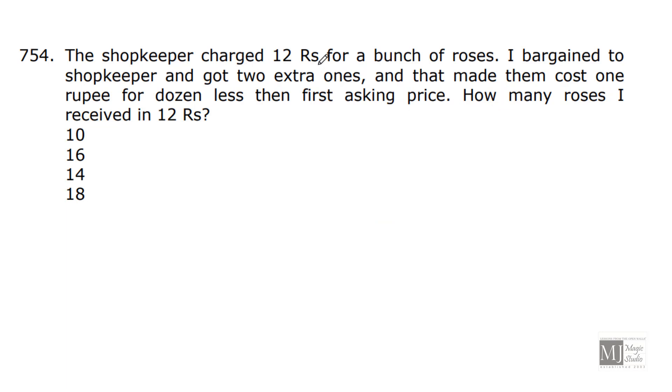The shopkeeper charged 12 rupees for a bunch of roses. Let me have, in rupees 12, we have x roses. I bargained to shopkeeper and got two extra ones. That means, now in rupees 12, I have got x + 2 roses. And that made them cost 1 rupee per dozen less than first asking price. What was the first asking price for 12 pieces? So, the first asking price for 12 pieces of roses was, in 12 rupees I was getting x roses. So, per rose cost was 12/x. And then the cost of 12 pieces would be × 12. That is 144/x.